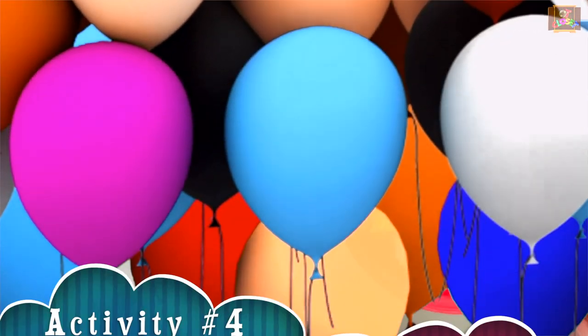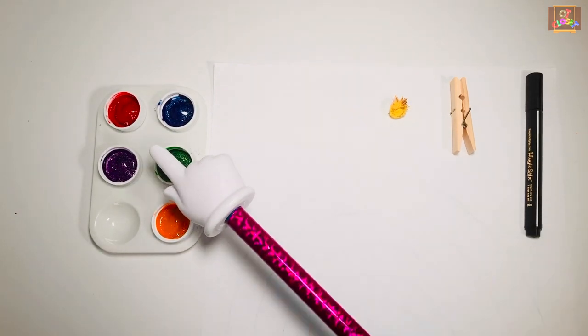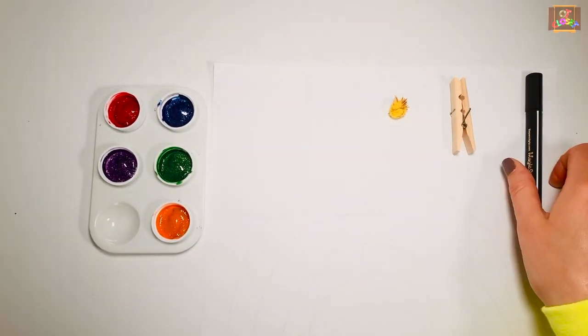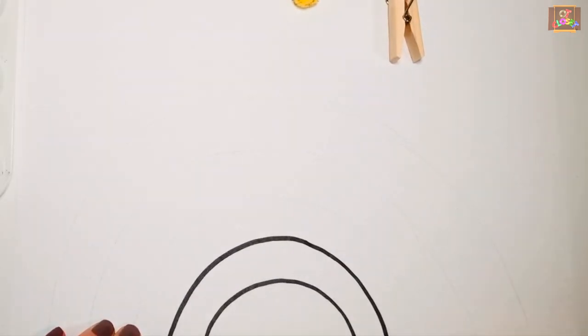For activity number four, you need some paint, paper, pom-poms, clothespin, and marker. Kids can draw or trace the rainbow.